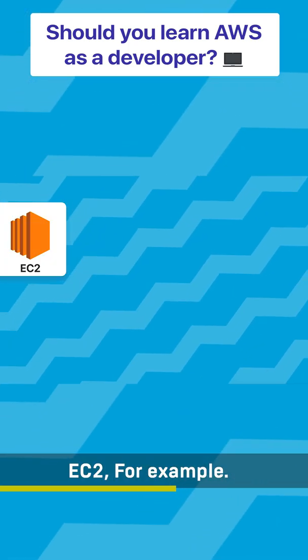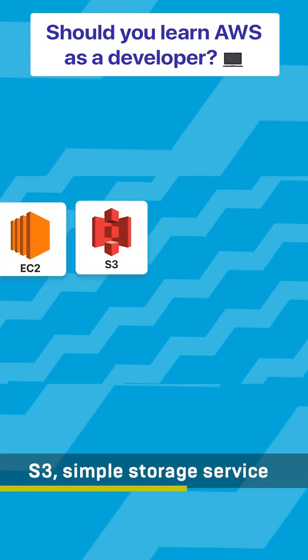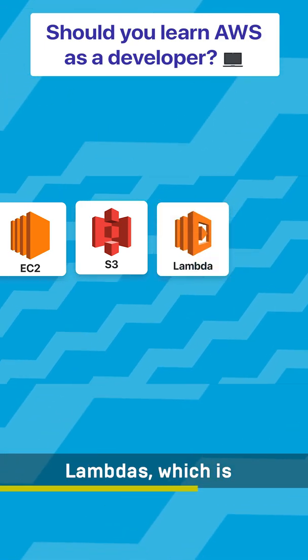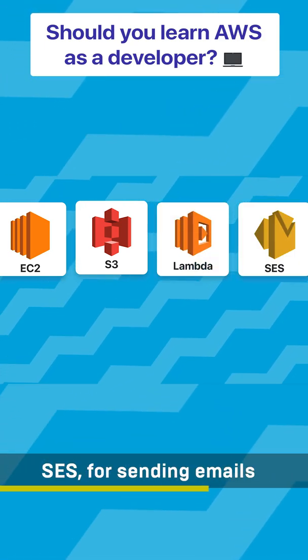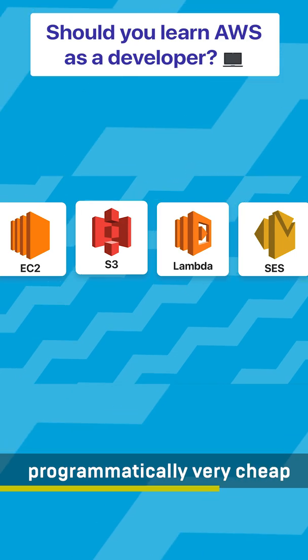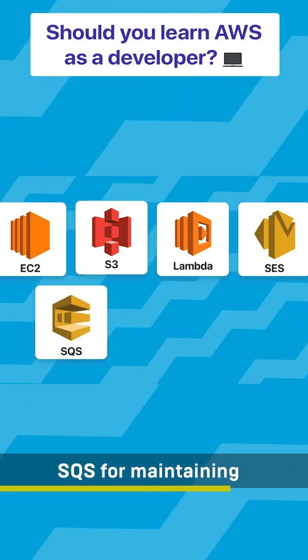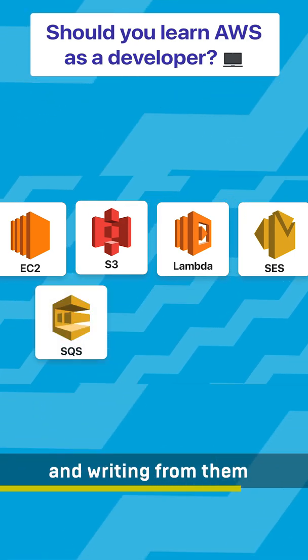EC2, for example, Elastic Compute. S3, simple storage service. Lambdas, which is serverless compute. SES, for sending emails programmatically — very cheap. SQS, for maintaining queue structures, reading and writing from them.